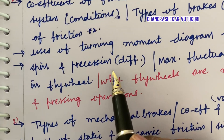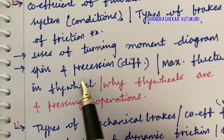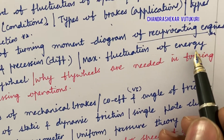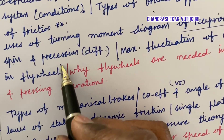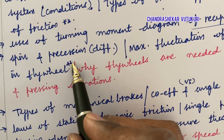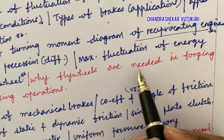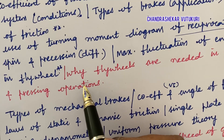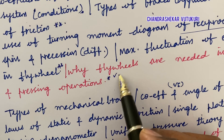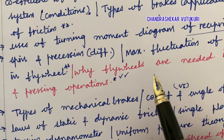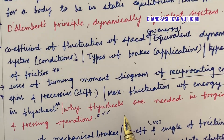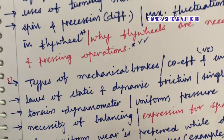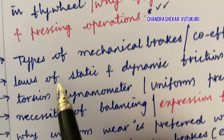Spin and precession and the differences between them, and maximum fluctuation of energy in a flywheel — these are said to be top-most questions. Why flywheels are needed in forging and pressing operations is a general question for mechanical engineers, and sometimes they are going to focus on such general questions as well.